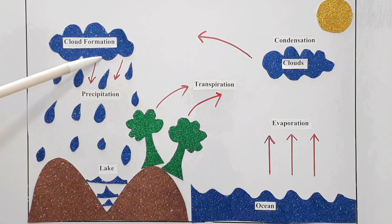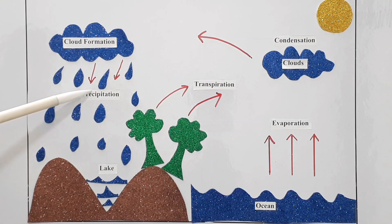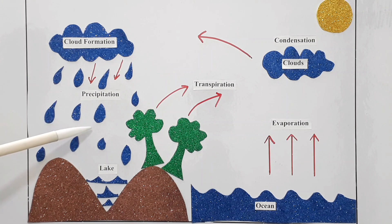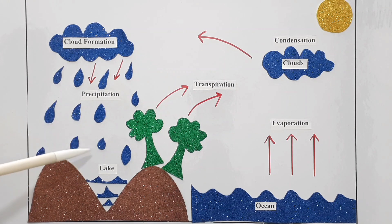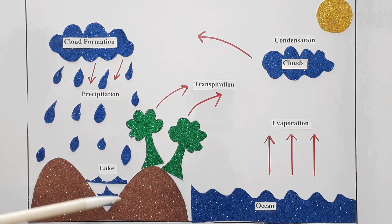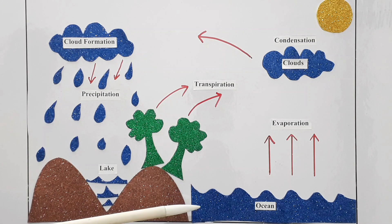When the clouds become heavy, they burst and fall down as rain. Thus precipitation takes place. The rain water again fills all the water bodies and this cycle continues in nature.